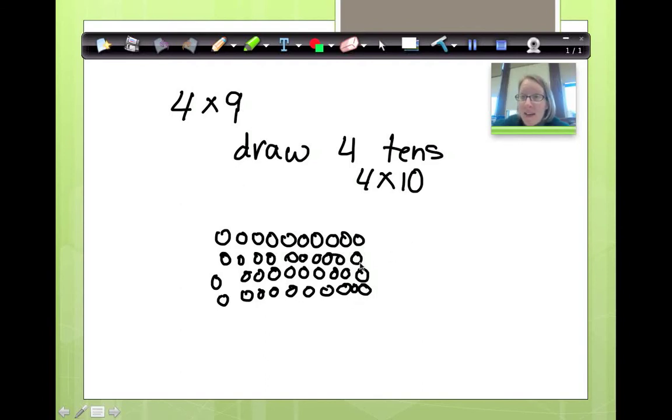Now, how many extras do I have? Well, I have an extra on each line, don't I? Because these are 10's and not 9's. So, how many lines do I have? 1, 2, 3, 4. So, I have 4 extras. Let's mark 4 extras off from the bottom line. 1, 2, 3, 4. Now, how many 10's do I have? 1, 2, 3. So, that's 3 10's. How many 1's? 1, 2, 3, 4, 5, 6. Is 4 times 9 36? It sure is, isn't it?